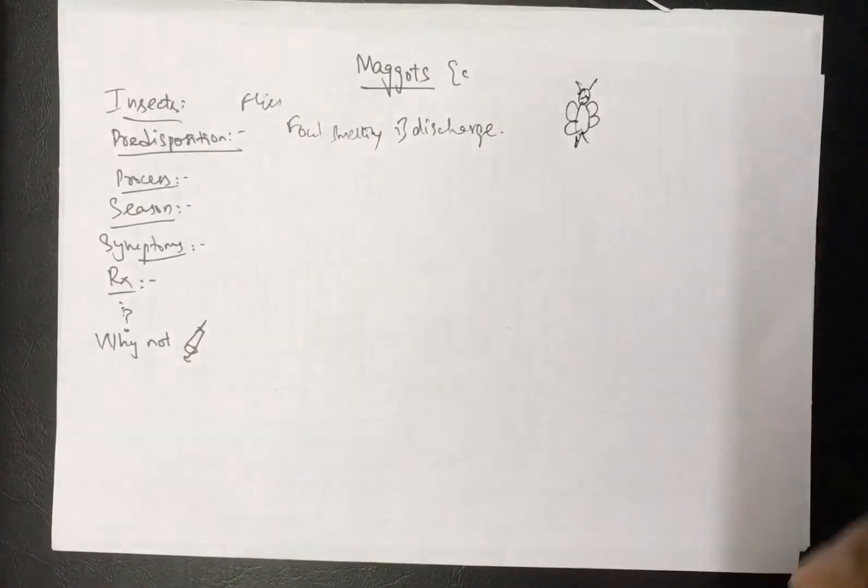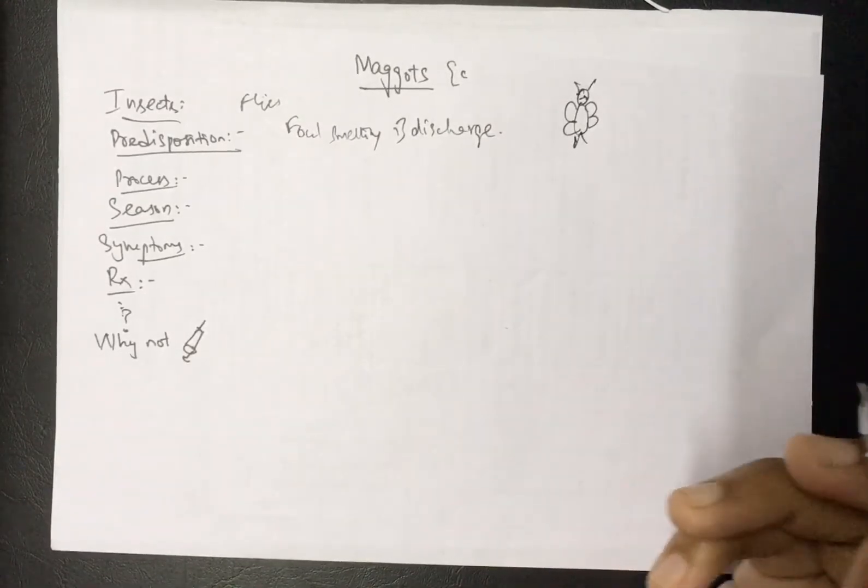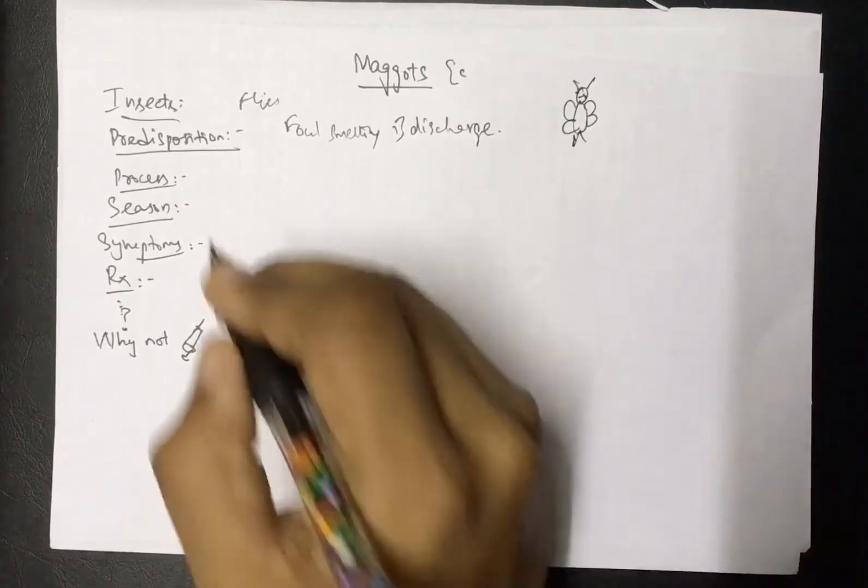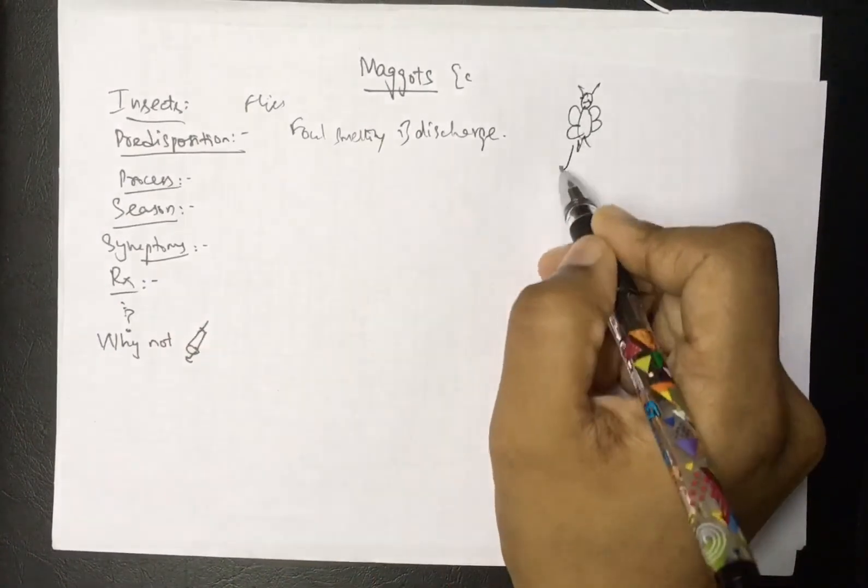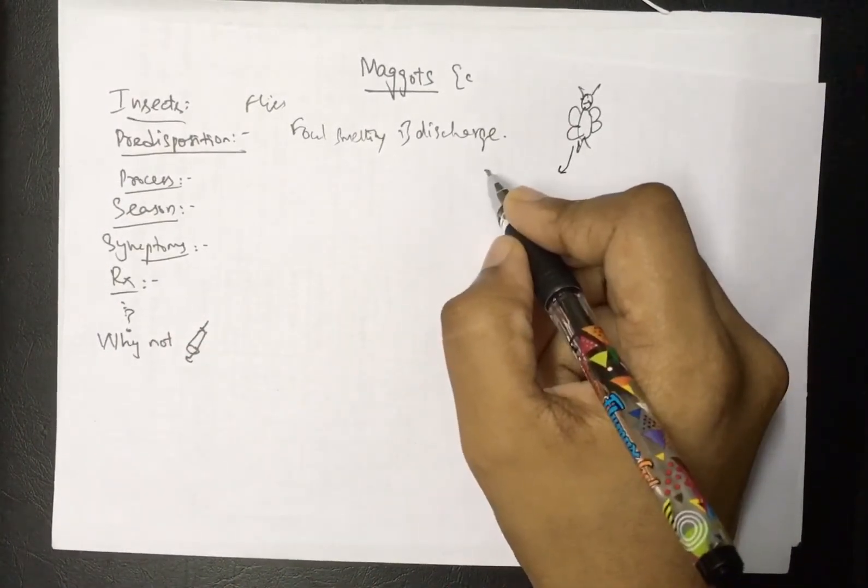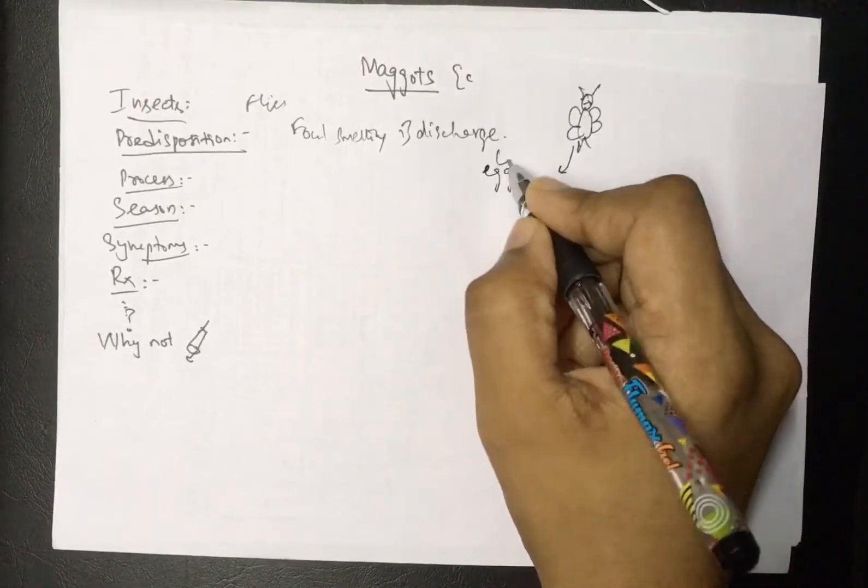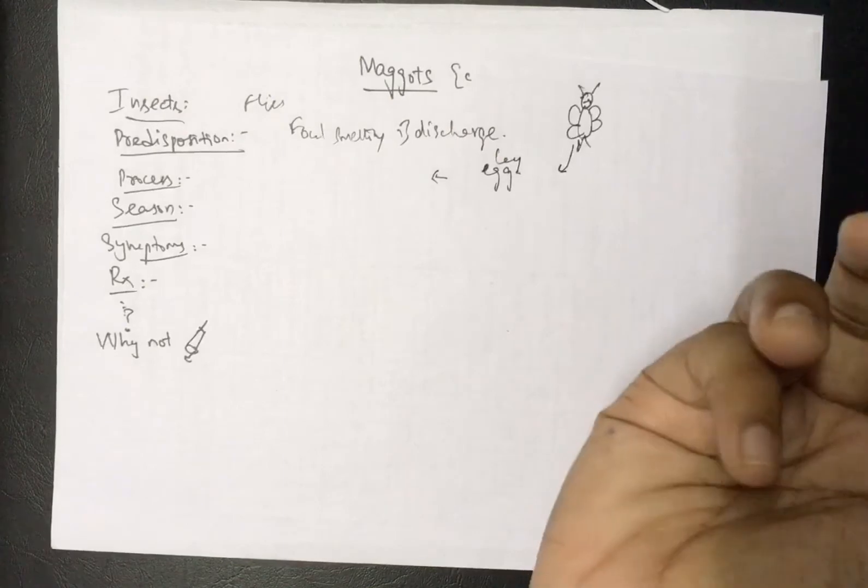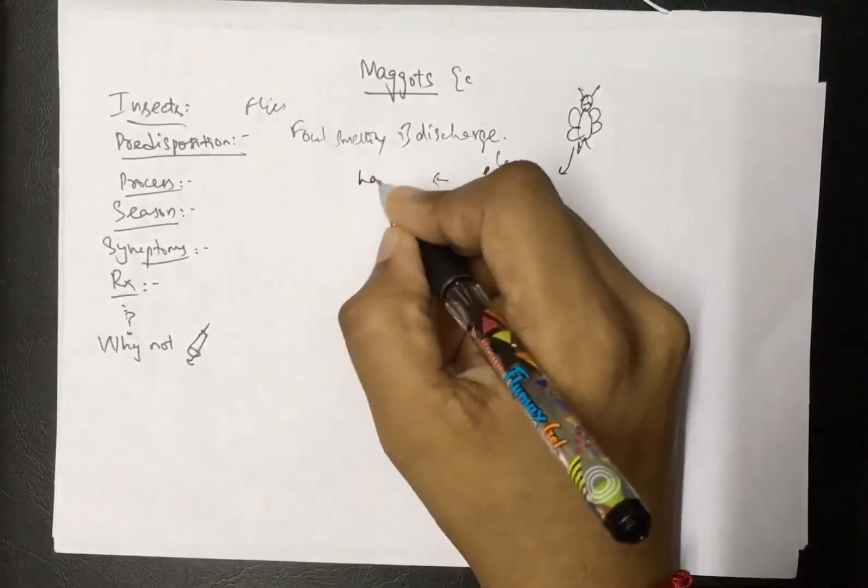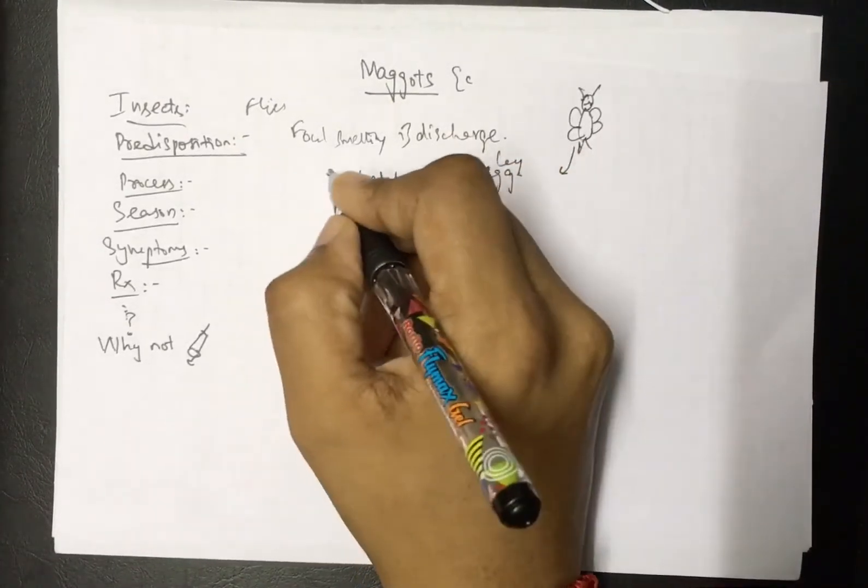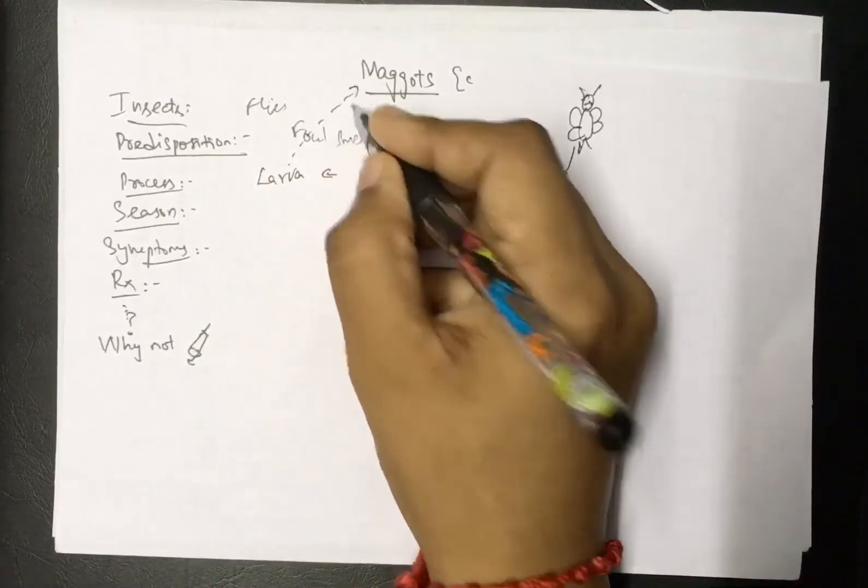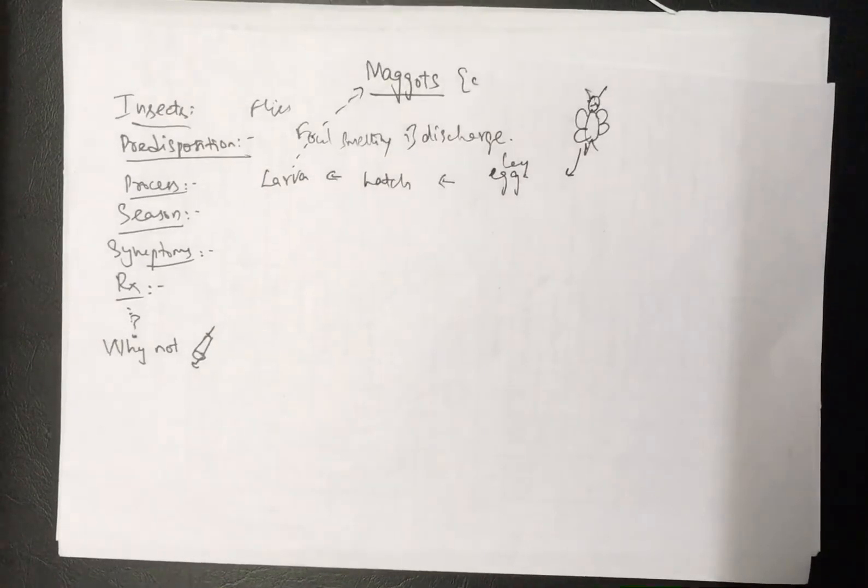Mainly house flies come and lay their eggs. The process starts when the fly gets attracted to the host and lays eggs. Once it lays eggs, the eggs eventually hatch out and give rise to larvae. These larvae are nothing but the maggots. Larvae are otherwise called maggots in technical terms.